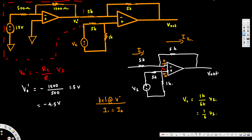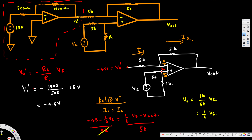Using Ohm's law, current equals voltage over resistance. For I1, the voltage is Vout prime (which is negative 4.5V) minus V-minus (which is (1/6) Vs), divided by 5k. For I2, the voltage is V-minus (1/6 Vs) minus Vout, divided by 5k. Since both resistances are 5k, the 5k terms cancel from both sides, leaving: negative 4.5 minus (1/6) Vs = (1/6) Vs minus Vout.